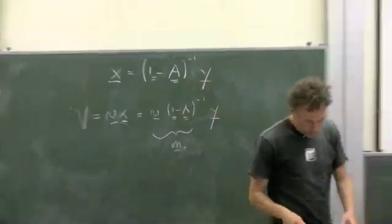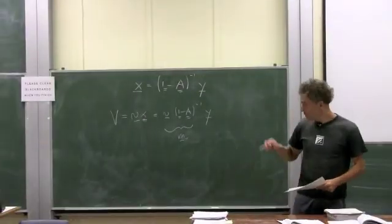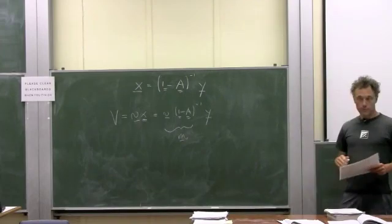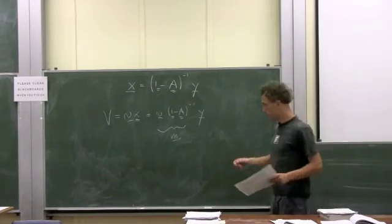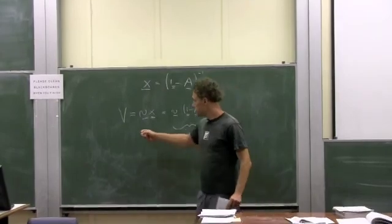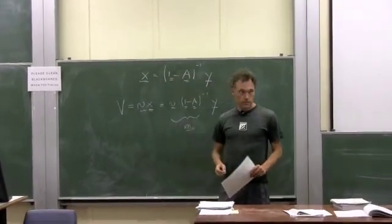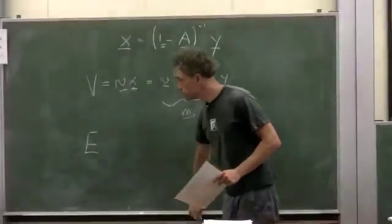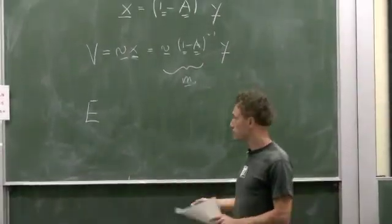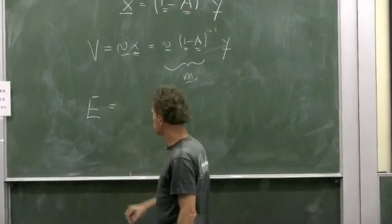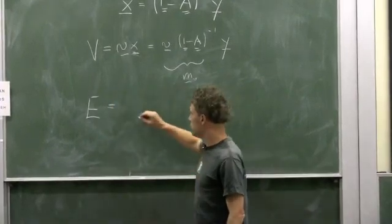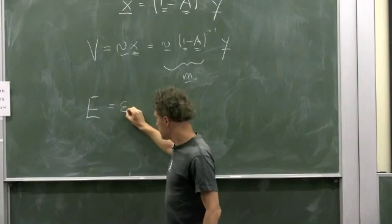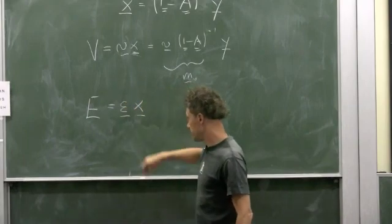So today, we're going to generalize this to environmental quantities. And this is very simple, as you will see. So instead of writing this equation down for gross value added, we just write it down for total emissions in an economy. Let E be total emissions of an economy. And we can do this simply by saying, this could be, first of all, the product of an emissions intensity Epsilon and gross output X.